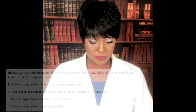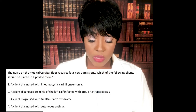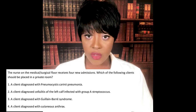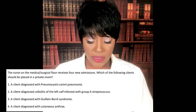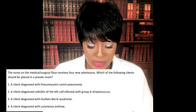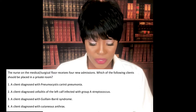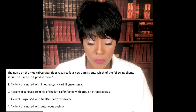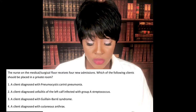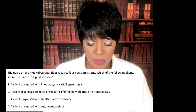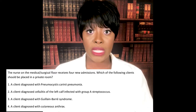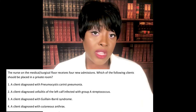First question: The nurse on the medical surgical floor receives four new admissions. Which of the following clients should be placed in a private room? One, a client diagnosed with pneumocystis carinii pneumonia; two, a client diagnosed with cellulitis of the left calf infected with group A strep; three, a client diagnosed with Guillain-Barré syndrome; or four, a client diagnosed with cutaneous anthrax. Press pause if you need to think about it.